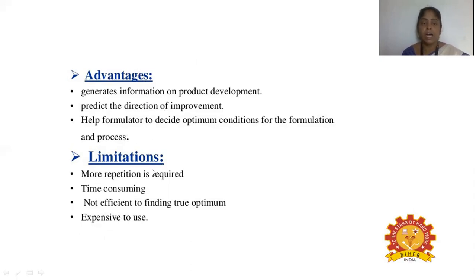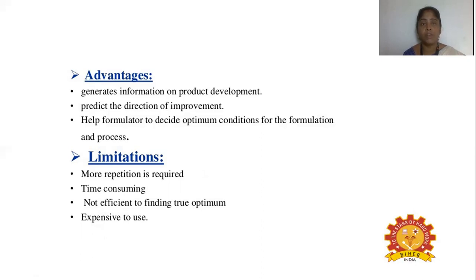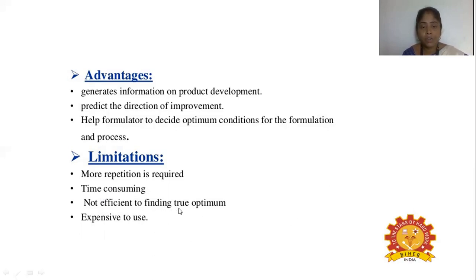As for demerits, a process cannot be optimized in just one attempt. It must be done repeatedly — many times — similar to titrating three times in a chemistry lab to get a concurrent value. For optimization, we must repeat the process a minimum of five to ten times. Because of this repetition, it takes a lot of time and it is not efficient for finding the true optimum.